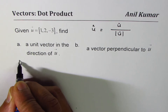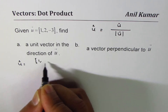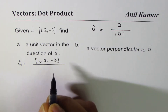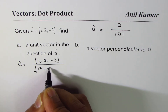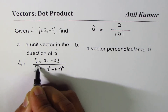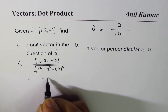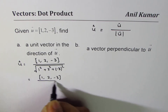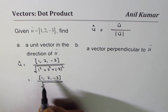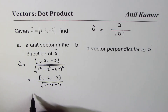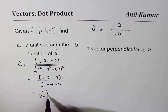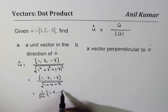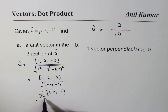So the unit vector of u will be (1, 2, -3) divided by the magnitude. The magnitude is the square root of 1² + 2² + (-3)², which is square root of 1 + 4 + 9 = √14. So the unit vector is (1/√14) times (1, 2, -3).